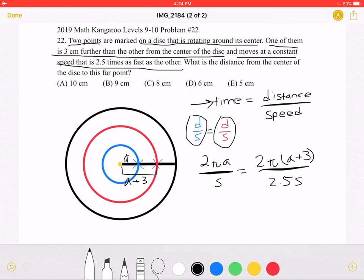So now we can substitute what we know. So the circumference, which is the distance for the blue one is 2 pi A over a speed we can mark as being S, must be equal to 2 pi times the radius of the red one, which is A plus 3, over 2.5 times the speed of the first one. Now we can cancel the S's or the speeds and the 2 pi's.